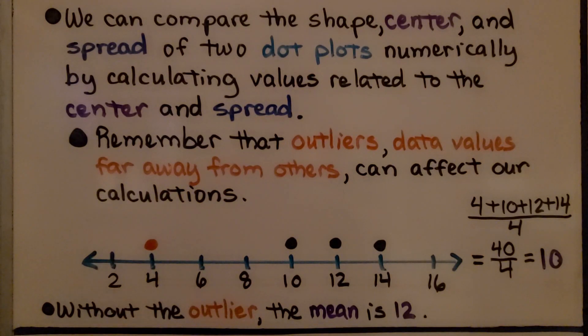Remember that outliers, the data values that are far away from the others, can affect our calculations. We have 4, 10, 12, and 14.